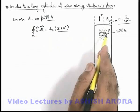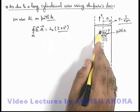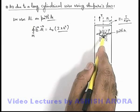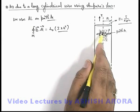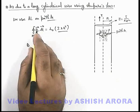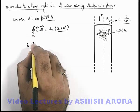And in this situation as B at every point of this path is tangential to it, and it is uniform by symmetry at a distance r from the axis, we can write this B dot dL as B dL and B can be taken out of the integration.